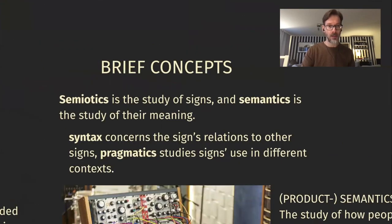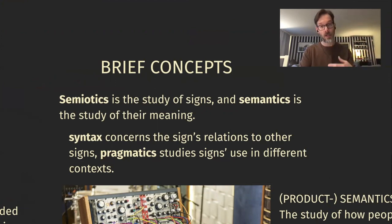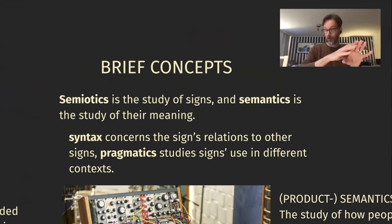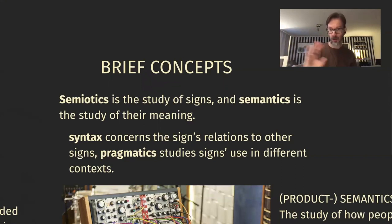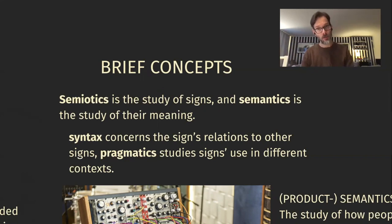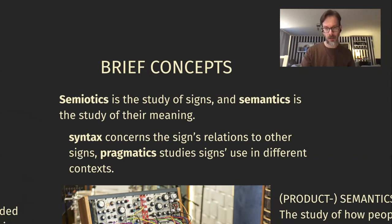We arrive at the ideas of semiotics, semantics, syntax, and pragmatics. Semiotics is the study of signs; semantics is the study of what the signs mean. Syntax concerns the signs' relations to other signs — how one sign refers to something else and how different signs work together. Pragmatics allows us to understand a single sign's use in different contexts — how meaning is transferred contextually. For example, tears from someone sitting alone in a room means sadness, whereas tears from a chef in a kitchen might mean the onion is quite strong — two different interpretations of the same phenomenon, contextualized.